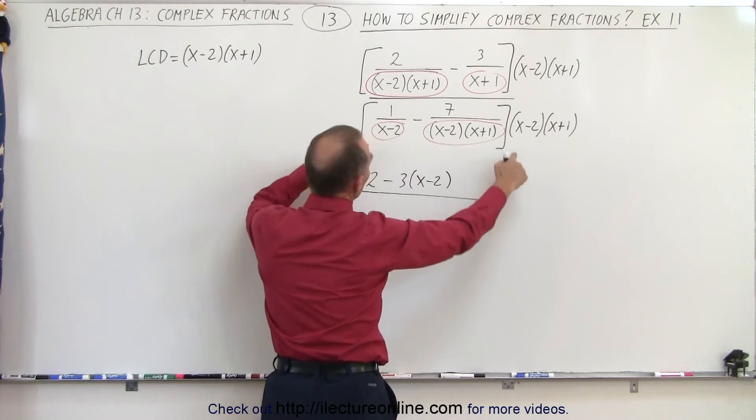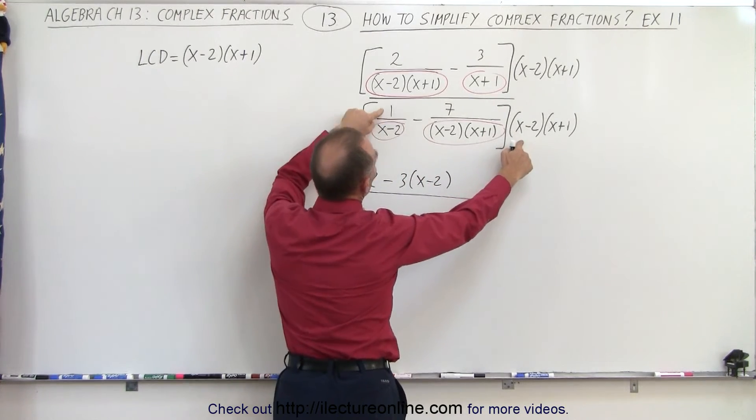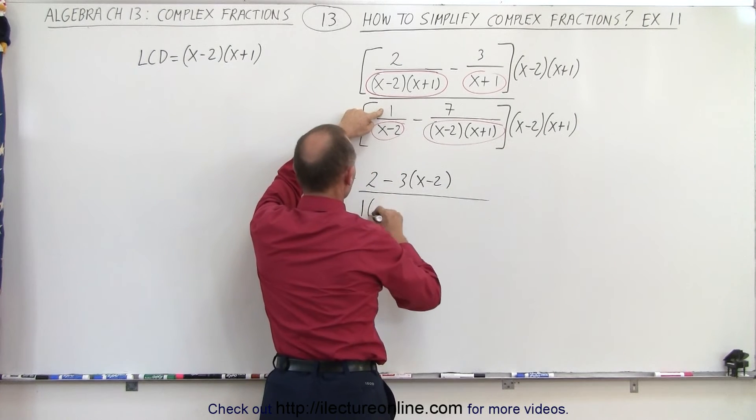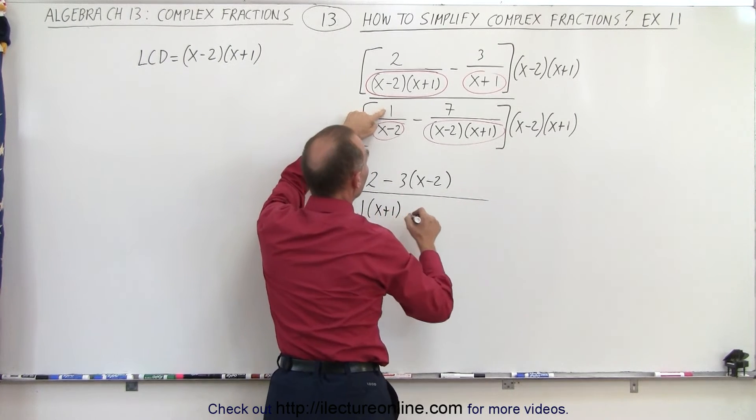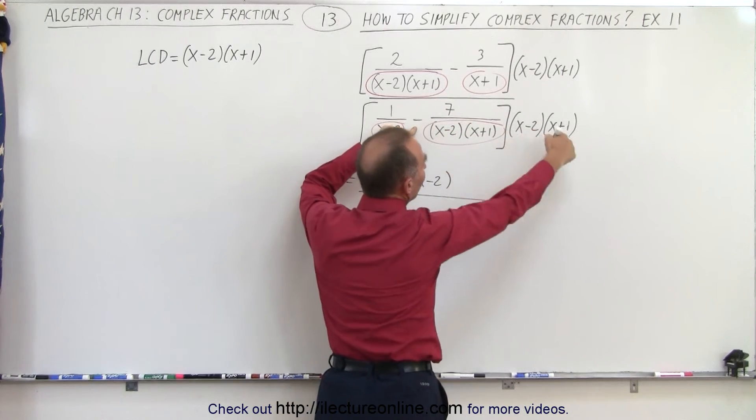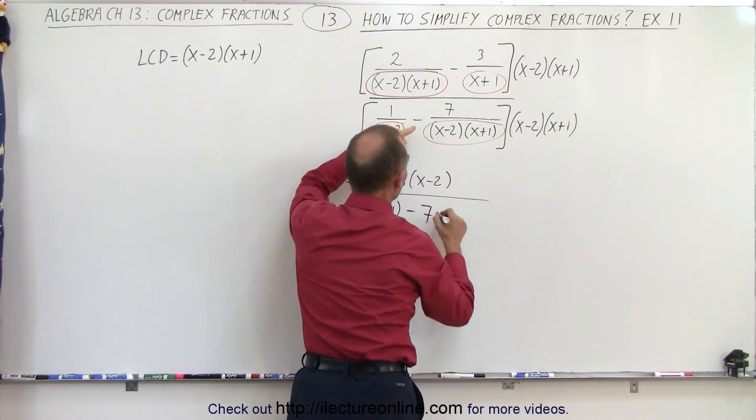In the denominator, notice the x minus 2s cancel out. We're left with 1 times x plus 1. And here, both x minus 2 and x plus 1 cancel out, and we're left with a minus 7.